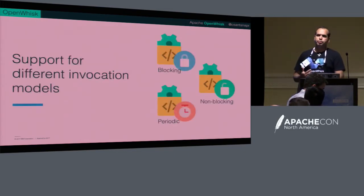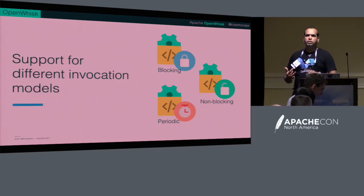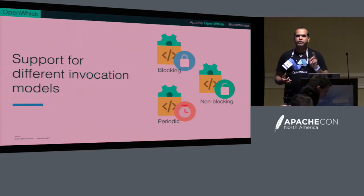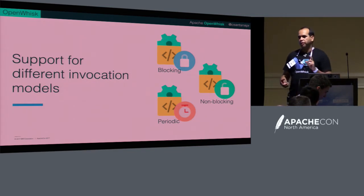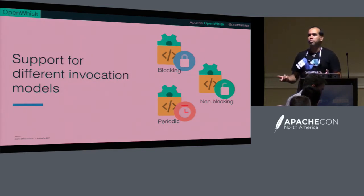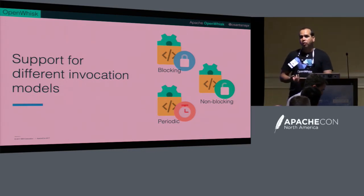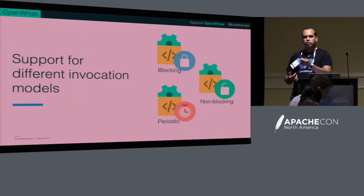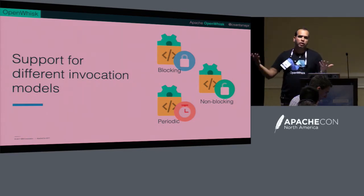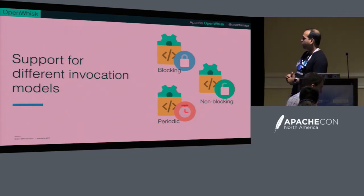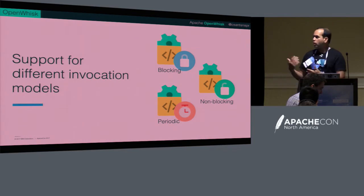Supporting models — basic three: fire-and-forget is the most common. If you have data from IoT, a message queue, changes from CouchDB, or a webhook from GitHub — those are fire-and-forget, the non-blocking ones. Then we have blocking ones where you're calling a REST API and want results back fast — you go directly to the action without a trigger or rule. And the last one is a periodic alarm.